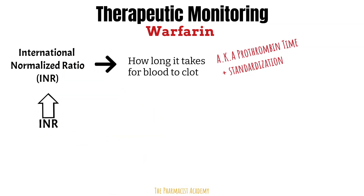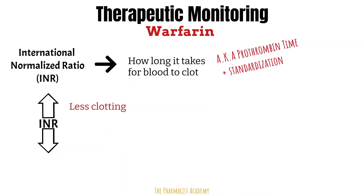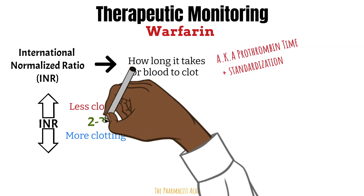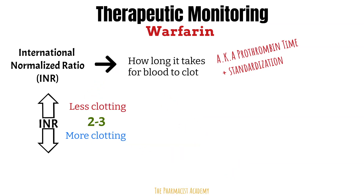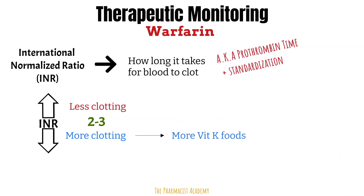The higher the INR, the higher the anticoagulation effect and the increased bleeding risk. The lower it is, the more prone the patient is to clots. The INR range varies based on the indication, but usually it's between 2 and 3. When the INR is in range, you have achieved the most appropriate anticoagulation effect — no need to increase or decrease the dose. If the INR is low or blood is clotting fast, it can be due to an increase in vitamin K-containing foods such as kale, spinach, and parsley, which help the liver make more clotting factors, working against warfarin's effects.